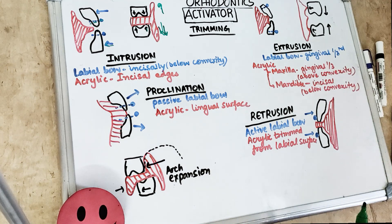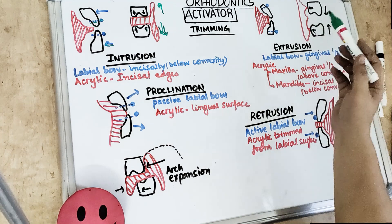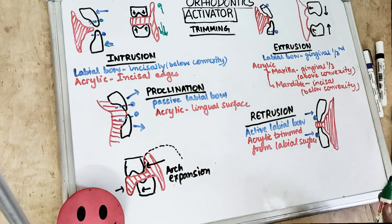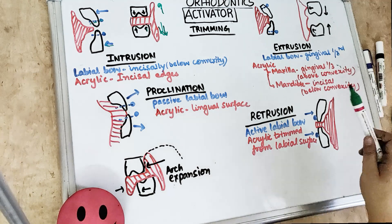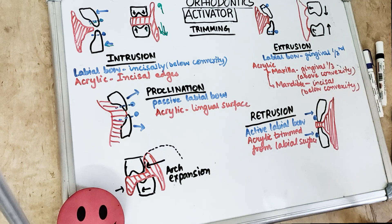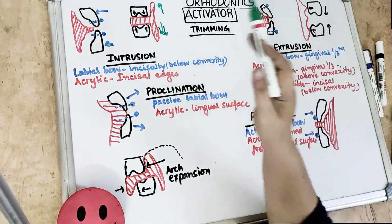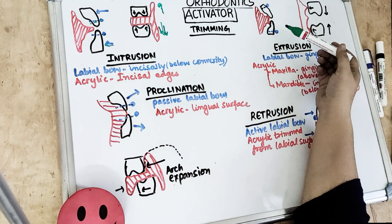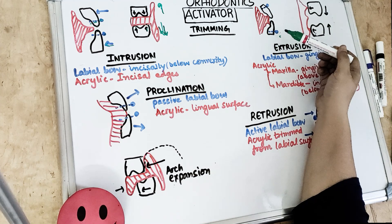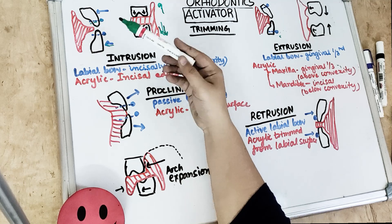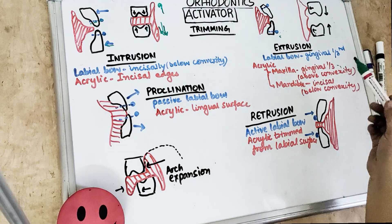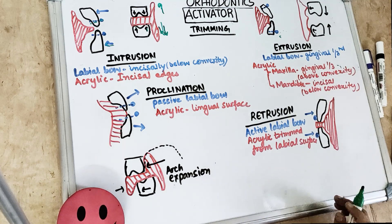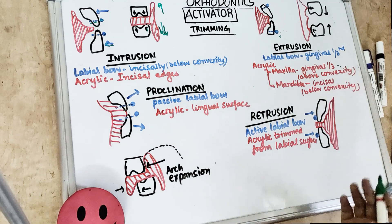For extrusion of incisors, the lingual surface is loaded above the area of greater convexity — at the gingival one-third in the maxilla, and below the area of greater convexity in the mandible. The labial bow is placed at the gingival one-third for extrusion. So, if the labial bow is placed at the incisal one-third, intrusion results; if placed at the gingival one-third, extrusion results. For molar extrusion, the lingual surfaces are loaded above the greater convexity in the maxilla and below in the mandible.